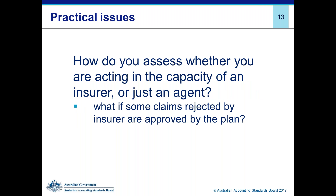This is a really tricky one and we've had quite a number of questions about insurance. How do you actually go about assessing whether you're an agent or a principal? The key criteria is whether or not you're actually bearing any insurance risk — is there a risk that an insurer might reject the claim but you still have to pay it to your member? If you're acting as a principal and bearing insurance risk, then you need to reflect on your balance sheet your insurance liabilities and also whether you've got a reinsurance asset from the external insurer.